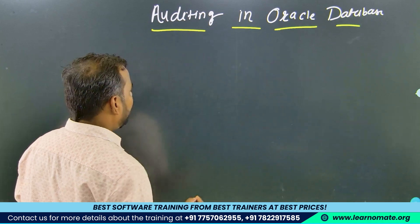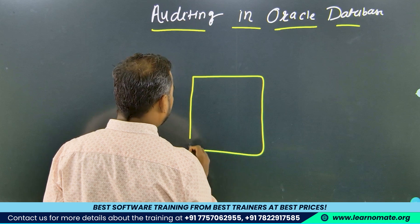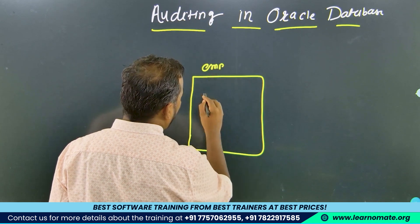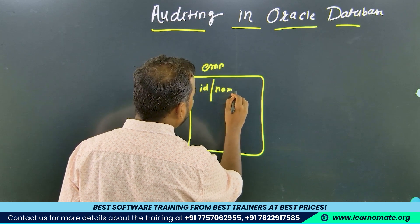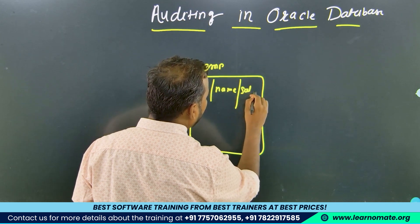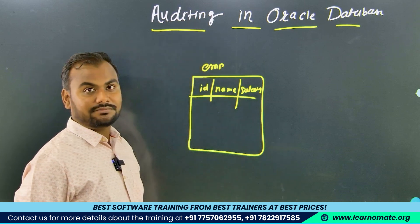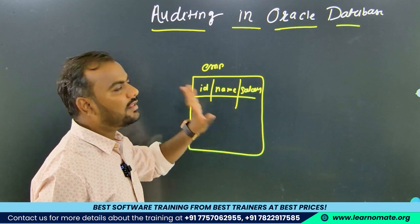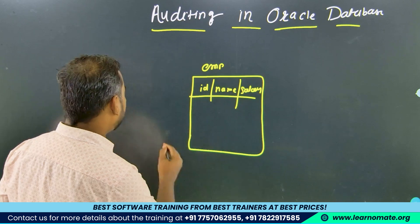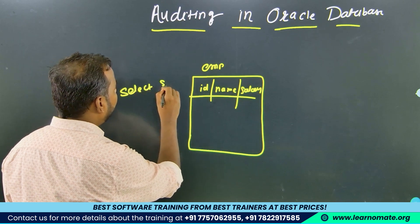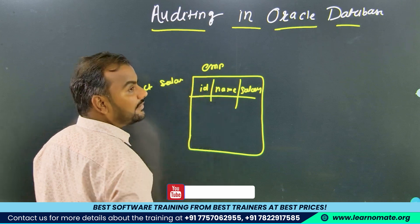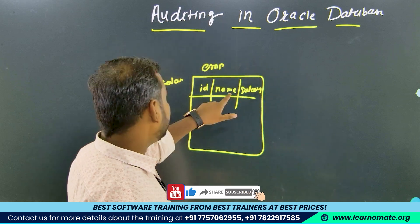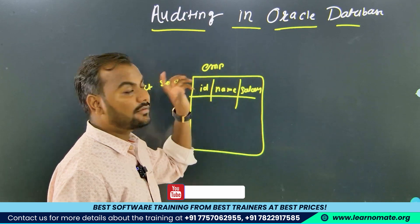Let's take an example: I have one table which is very crucial — the EMT table — and in that we have ID, name, and salary. There is a chance that someone might be looking at the salary of all employees, writing a query like SELECT salary FROM EMT table. So I want to know who is running the SELECT command on the salary column for this particular table.